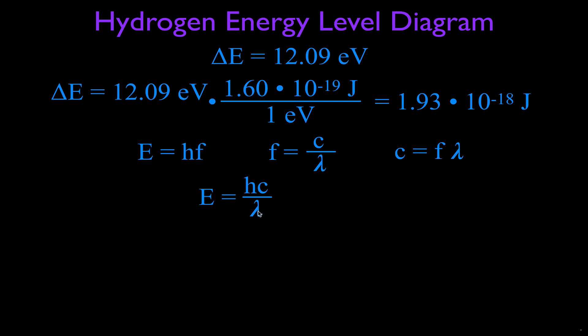But we actually want to solve for the wavelength. We're not solving for the energy, we actually have been given the energy. So I'm just going to rearrange this by solving this equation for the wavelength, and that means that the wavelength is then equal to Planck's constant times the speed of light divided by the energy, λ=hc/E, and the energy has to be in joules.